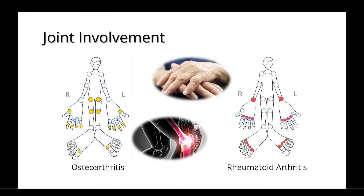One major difference between these two types of arthritis is the joints that are involved. With osteoarthritis, it primarily affects the hips, the thumbs, the knees, the big toes, and the distal parts of the fingers. It can cause pain and bony enlargement in these areas.